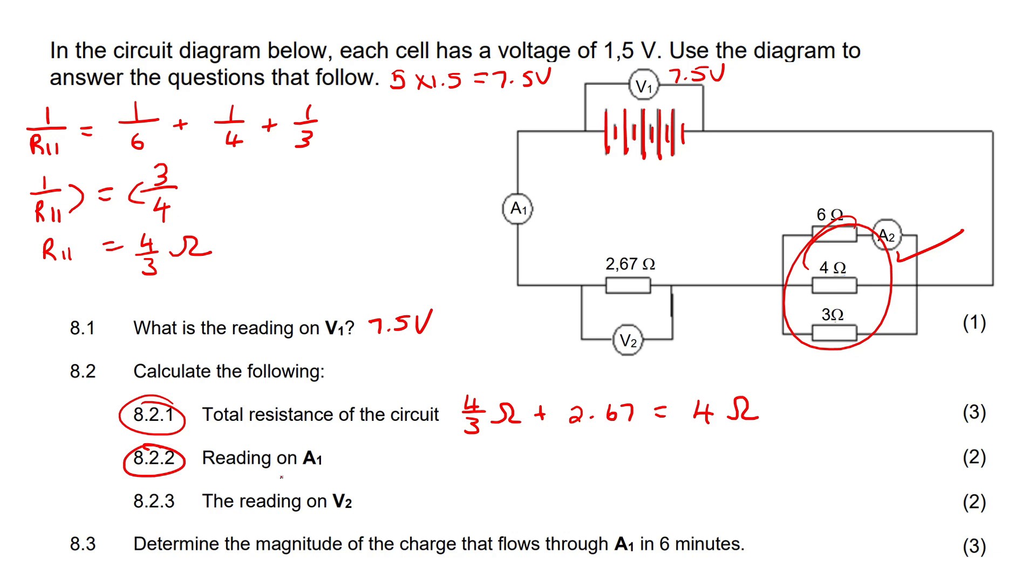This question says, what is the reading on A1? So we know that to calculate current, we use I equals V over R. If we use the total voltage in the circuit,